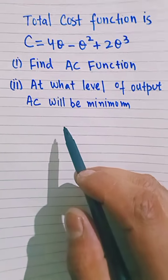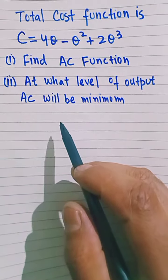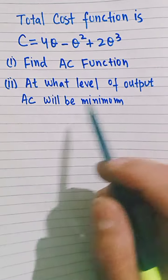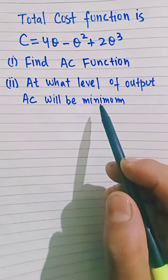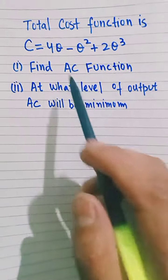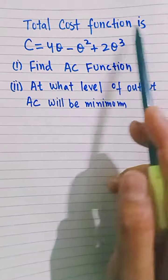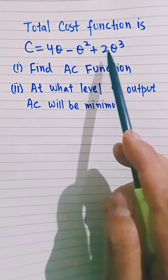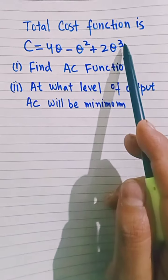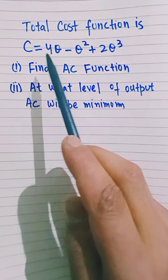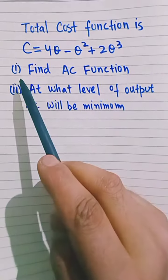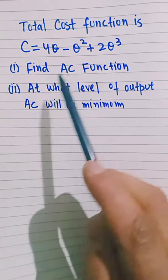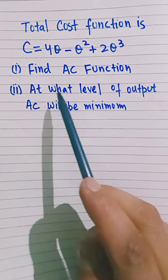In this video we will learn how to find the average cost function and the level of output when average cost is minimum. The question is: total cost function is given as C = 4Q - Q² + 2Q³, where C denotes the total cost and Q is the output. The first part asks us to find the average cost function, and secondly, we have to find the level of output where average cost is minimum.